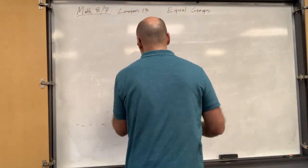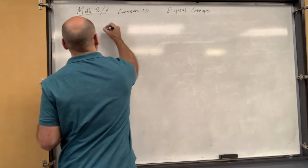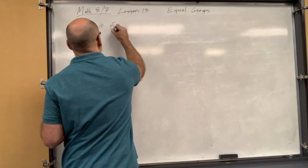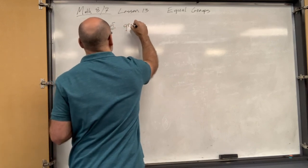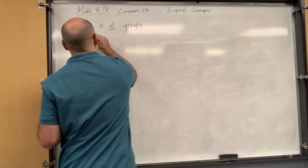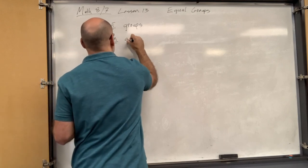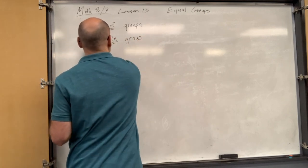Now you will see this formula. So number of groups times number in one group equals your total.